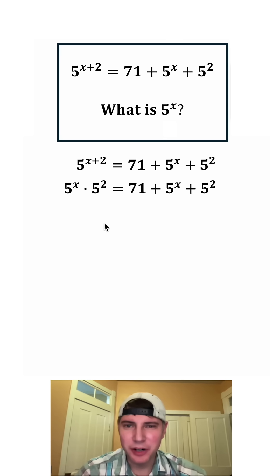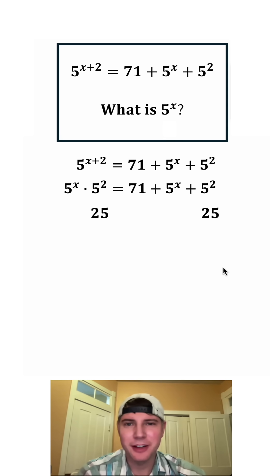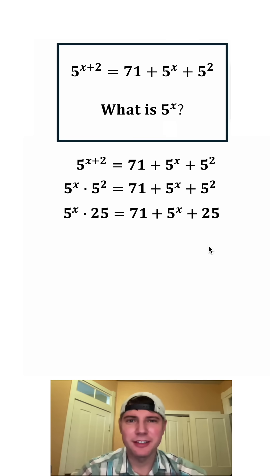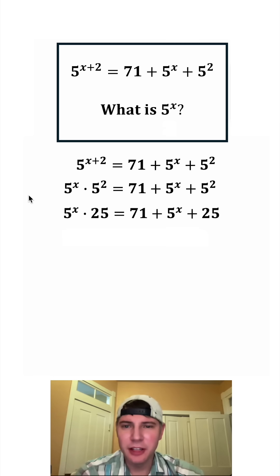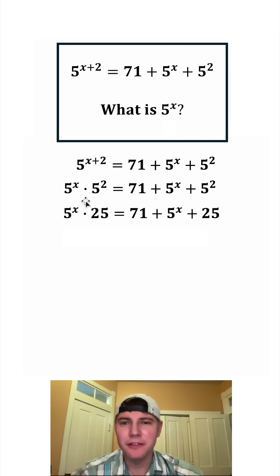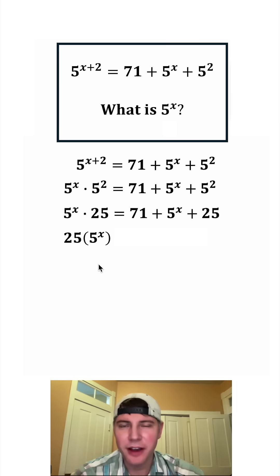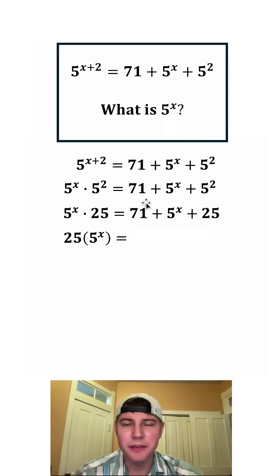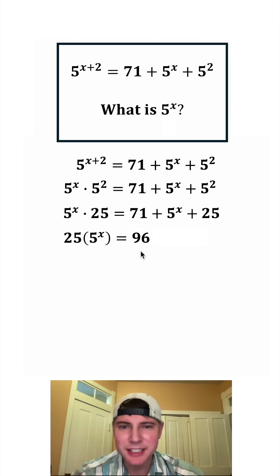Next, this 5 squared is equal to 25, and this 5 squared is also equal to 25. Then let's copy down everything else. On the left-hand side, this 5 to the power of x times 25 can be thought of as 25 5 to the power of x's. And on the right-hand side, this 71 plus 25 can combine to give us 96.